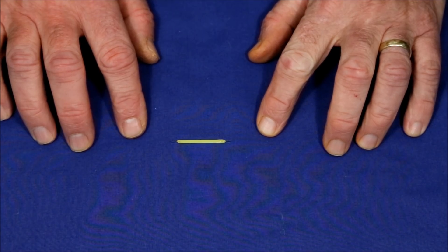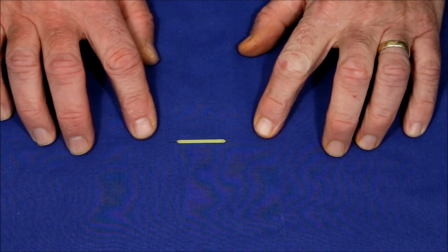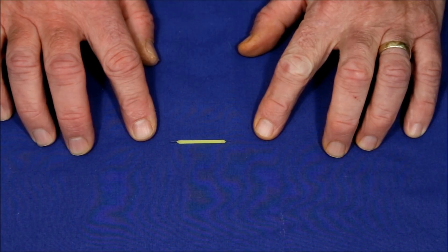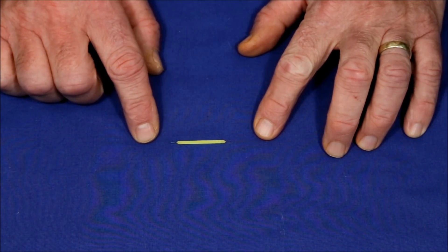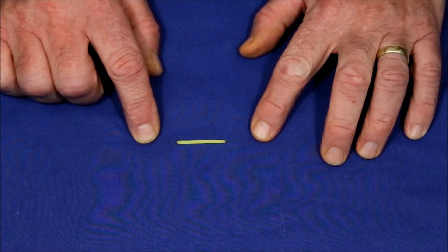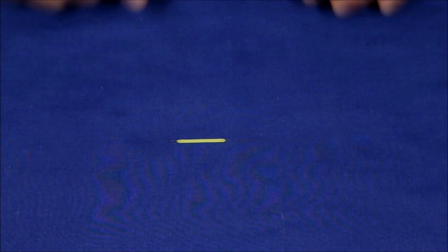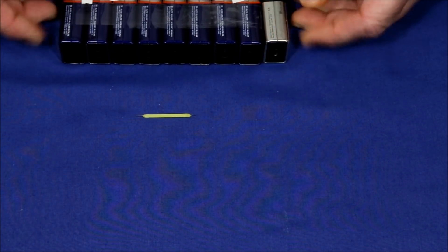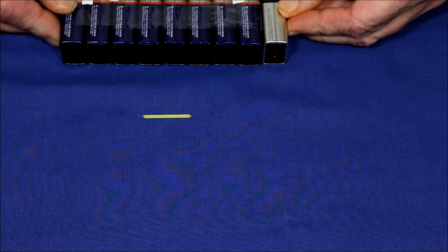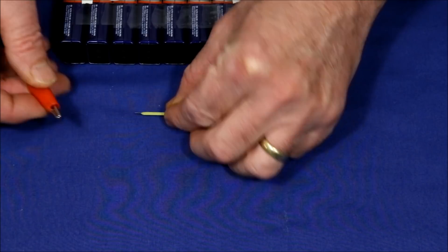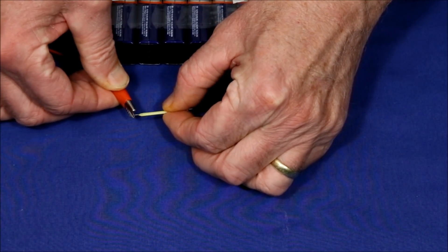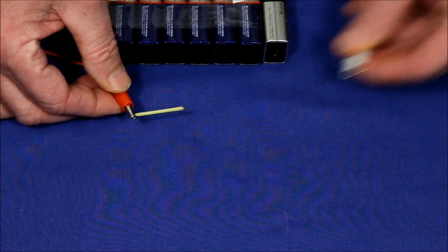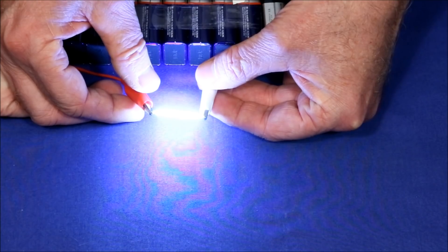The voltage required to drive these depends on the particular filament LED you've got. For example, this one has 28 LED elements, and I'll show you what those look like in a minute, and it requires a minimum of 70 volts. Here's what one looks like when powered by a string of 9, 9-volt batteries connected in series. They're really bright.